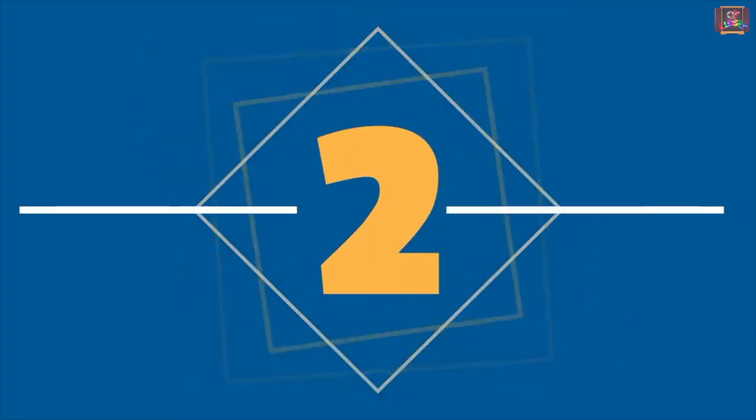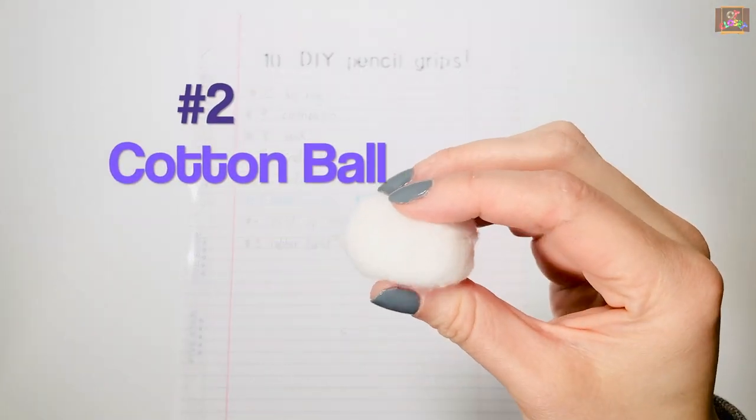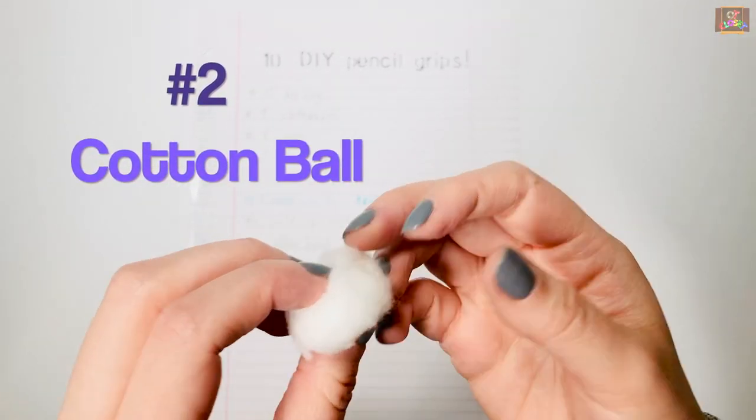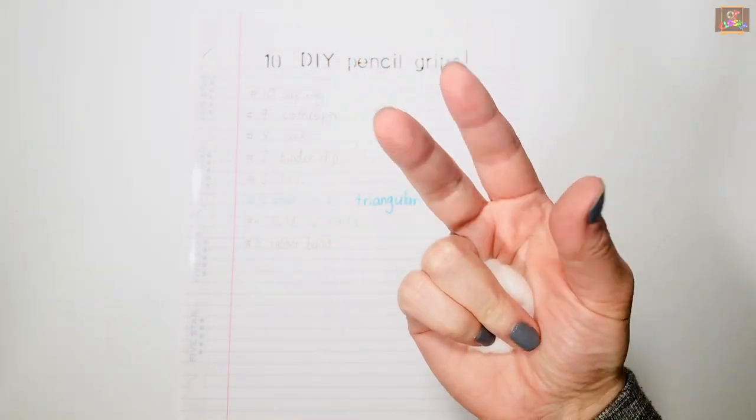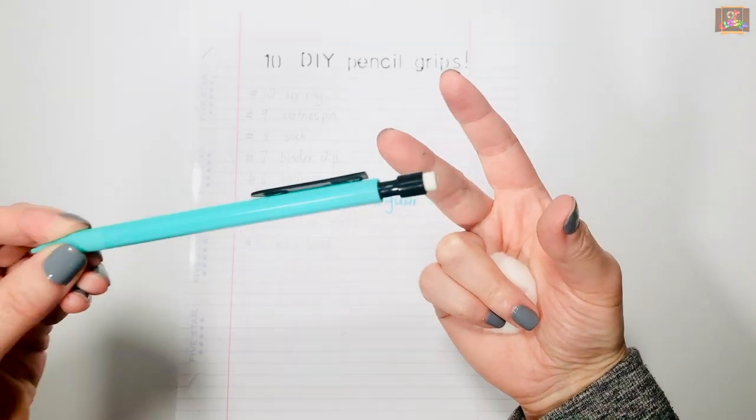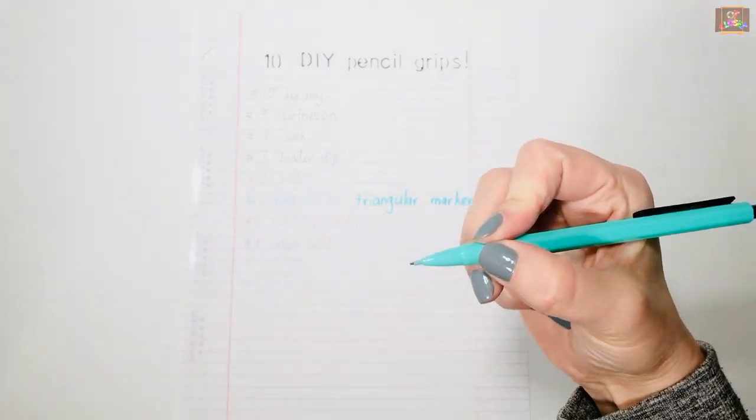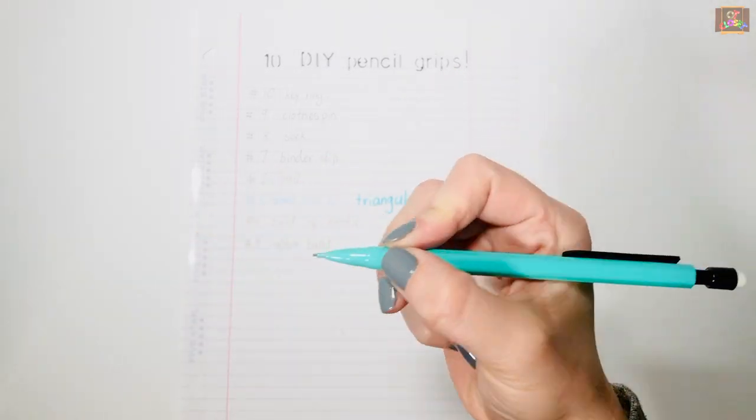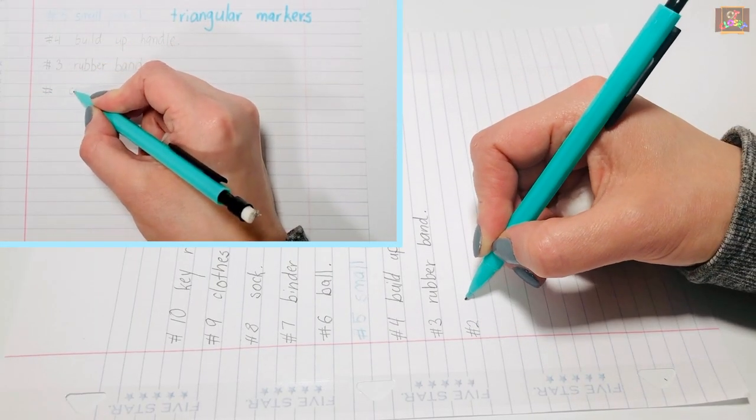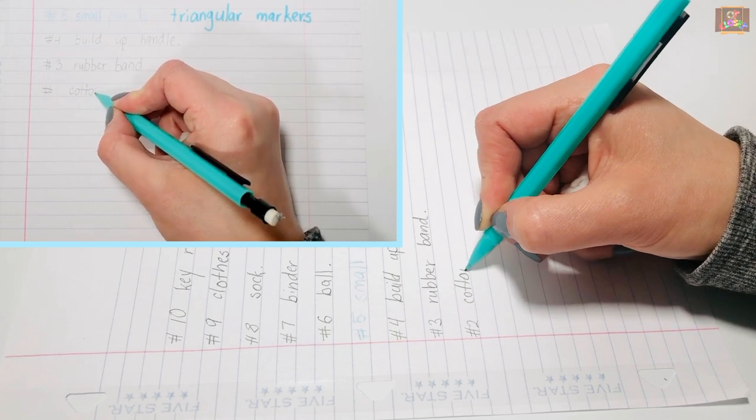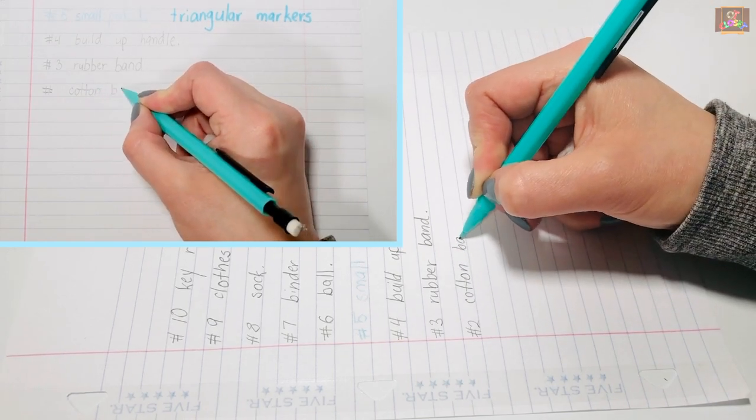Number 2: Cotton Ball. Place the cotton ball on the ulnar side of your hand and cue the ring and pinky fingers to be closed against it. A cotton ball reminds the child to keep the ring and pinky fingers closed against the palm. It provides stability to the ulnar side while writing.